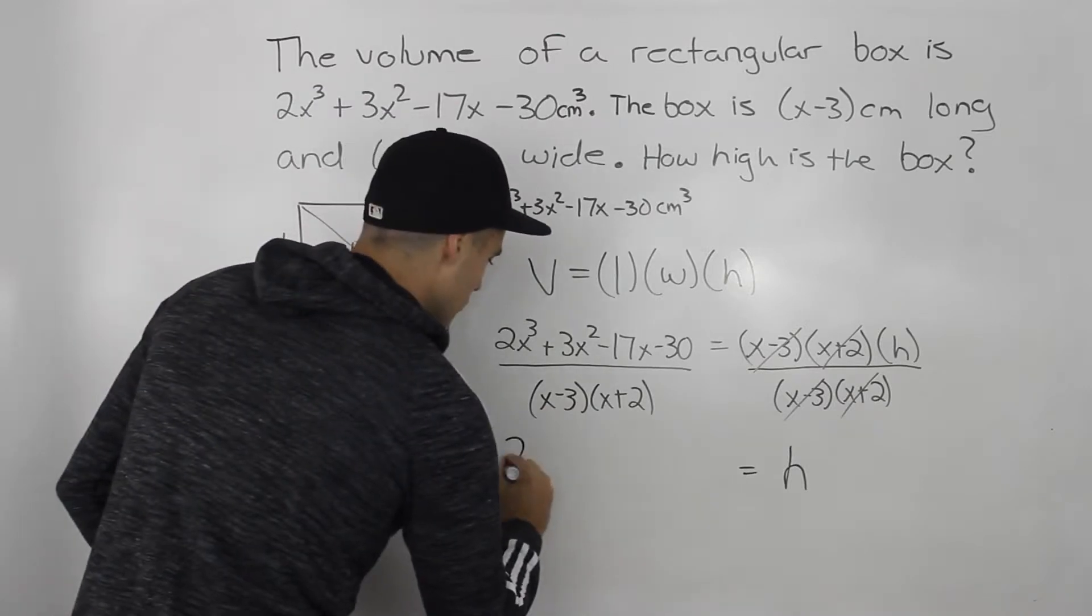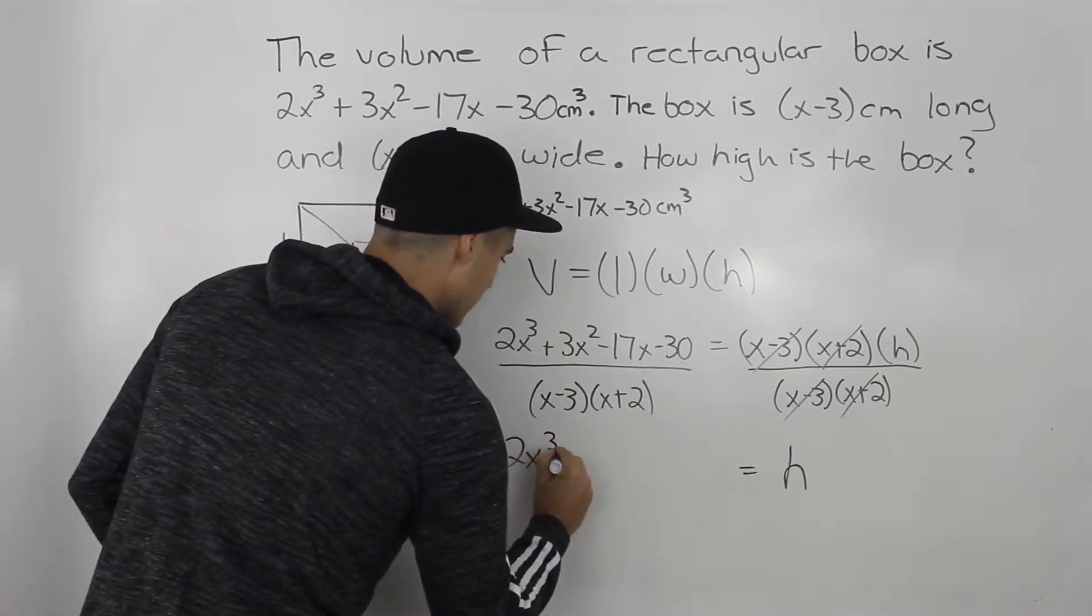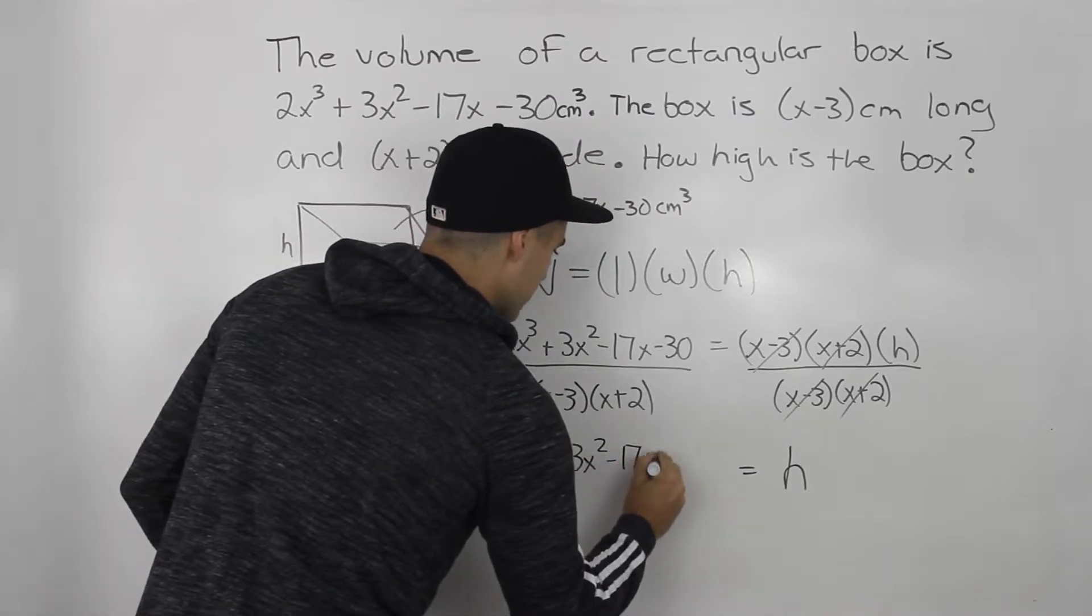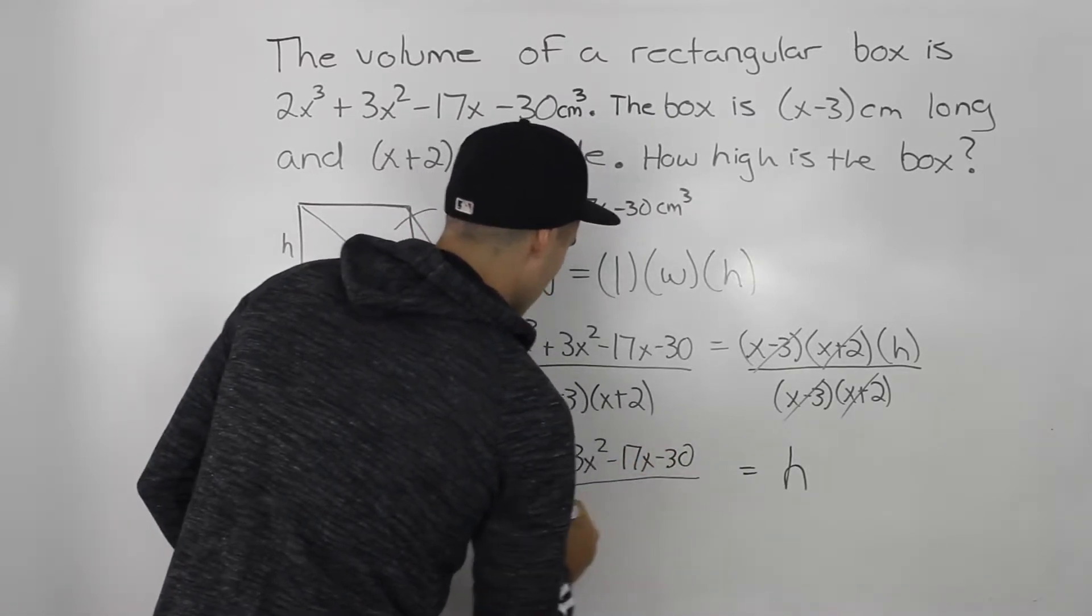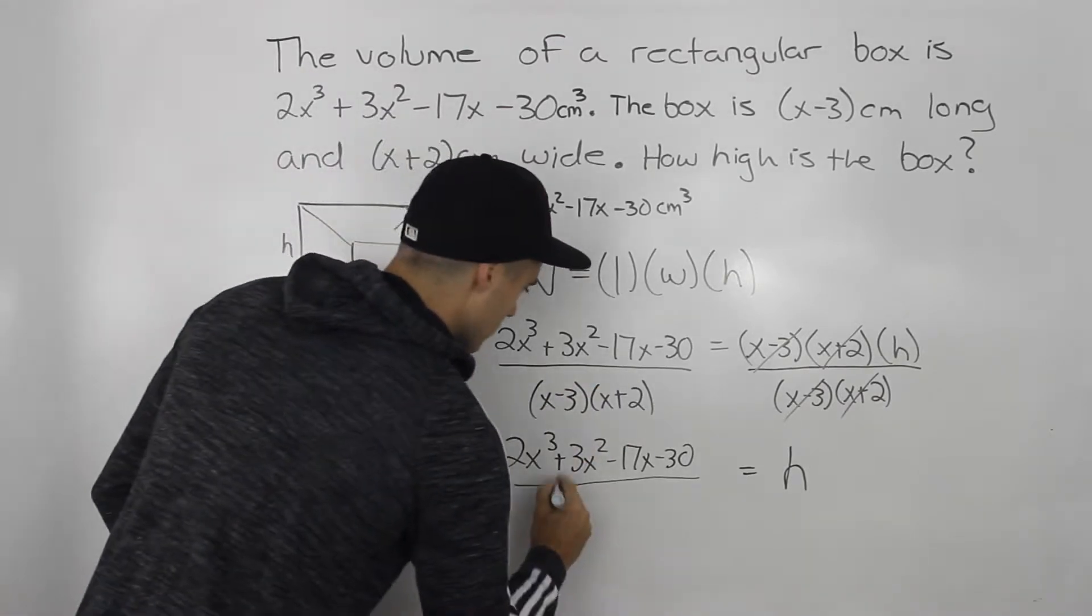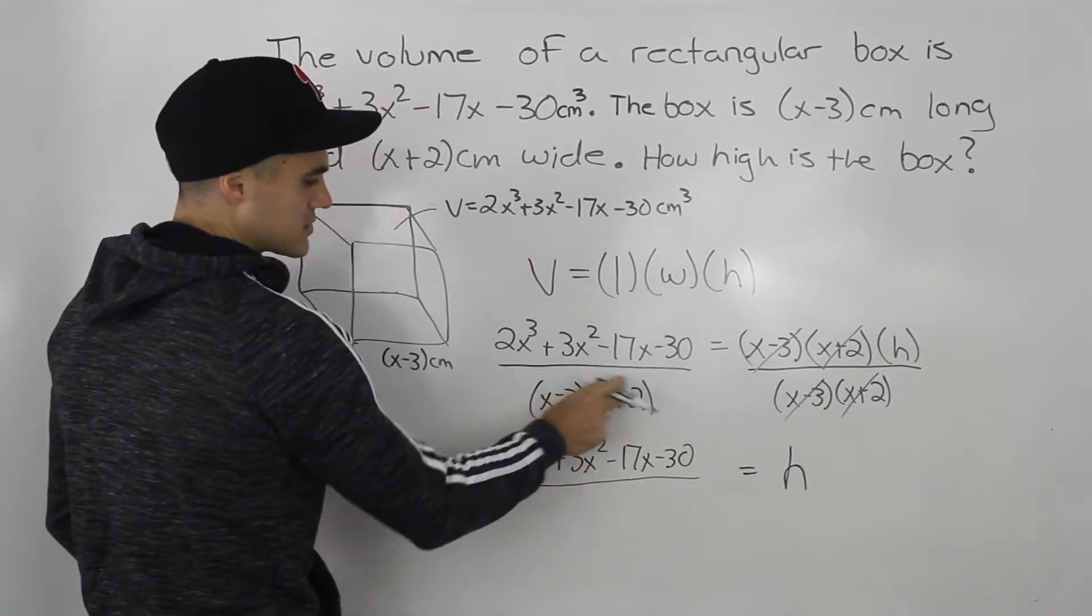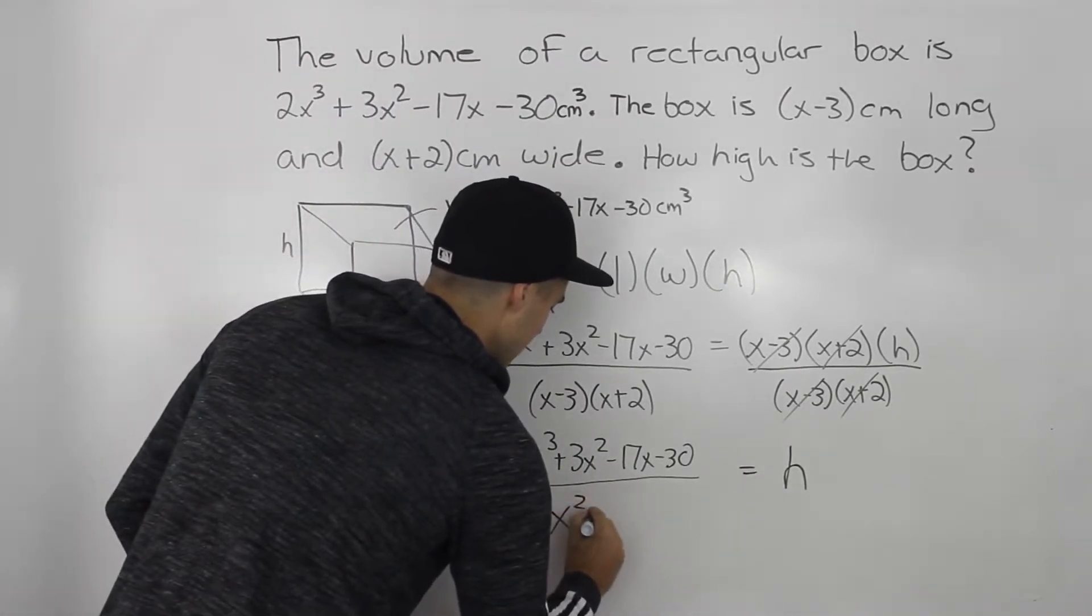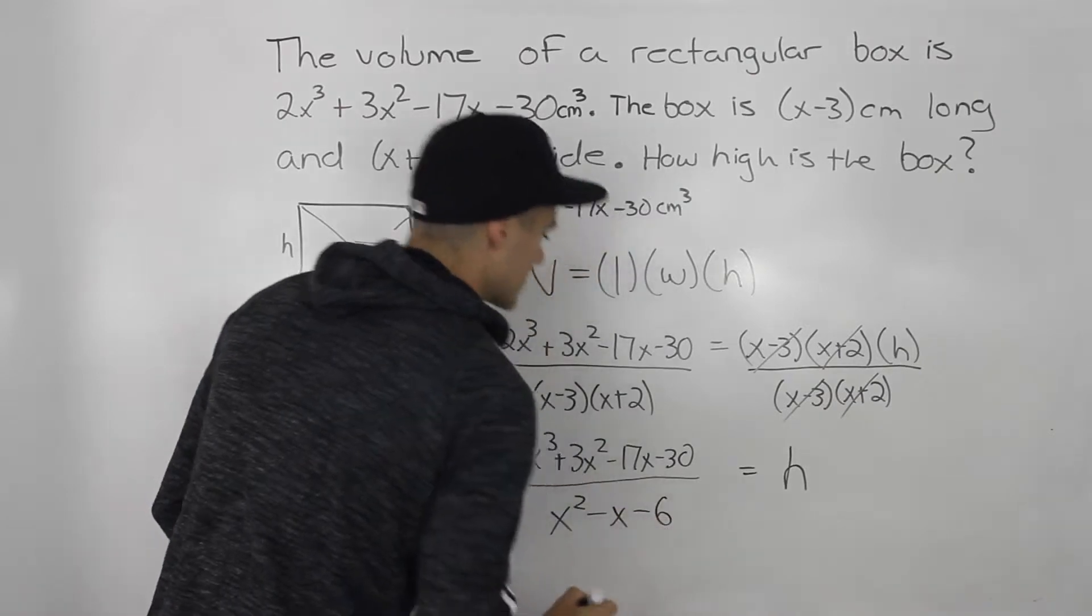And then here, the numerator, we can't simplify at the moment. But we can expand this denominator, right? So if we expand this, (x-3) times (x+2), if we foil it out, what we'll end up getting is x² - x - 6.